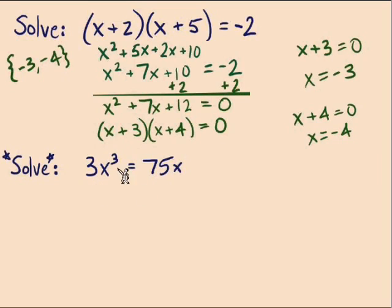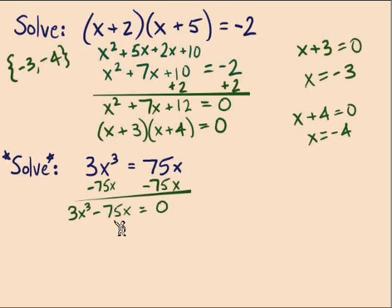I'll move 75x over to the left side where it's going to be minus 75x. The terms are in descending order, they equal zero. It's time to factor, and just keep in mind what are the things we need to do when it comes to factoring.